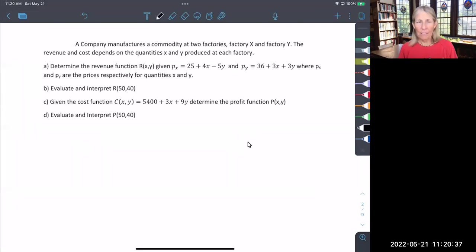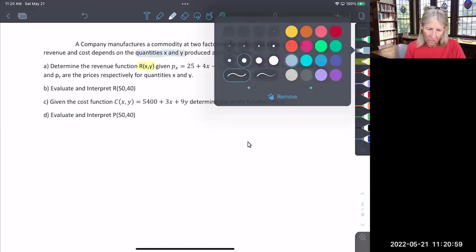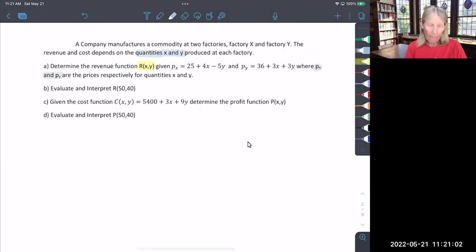We need to keep our variables organized. The revenue function R(X,Y) is what we're looking for. As you know, revenue is always quantity times price. The quantities are X and Y, which we'll multiply by the given prices P(X) and P(Y) respectively. For our revenue function R(X,Y), we have two quantities and two prices to deal with.